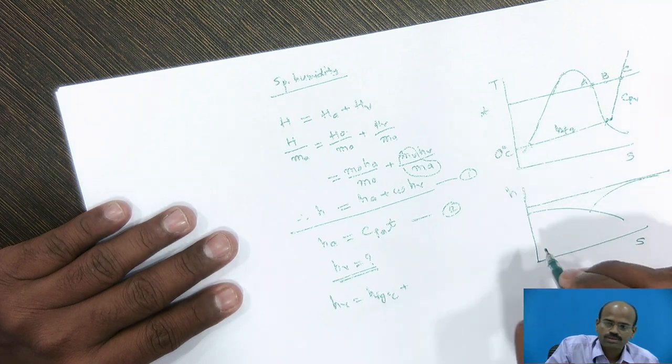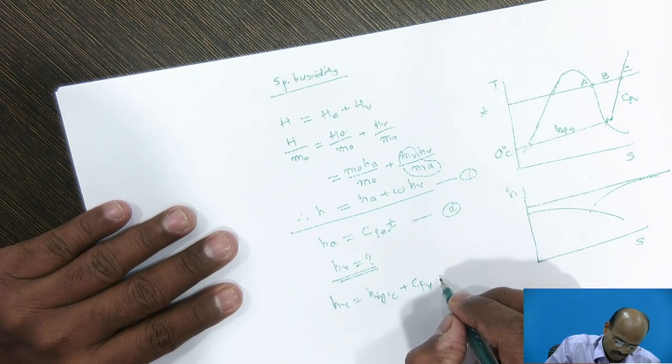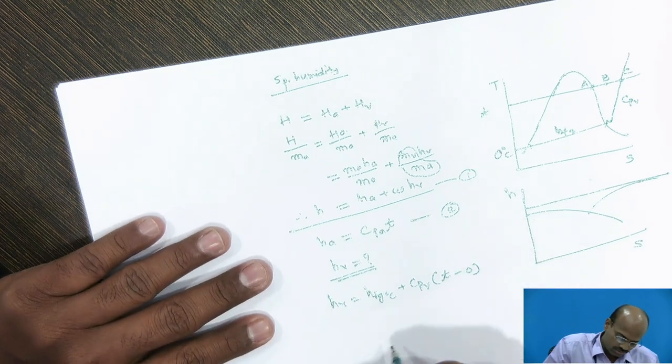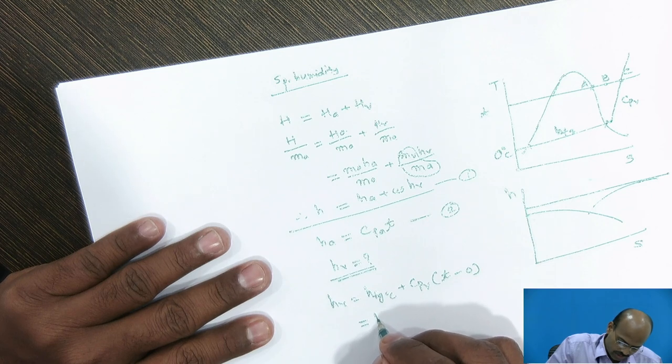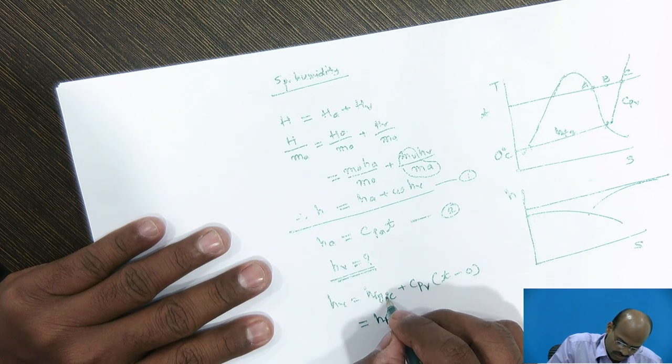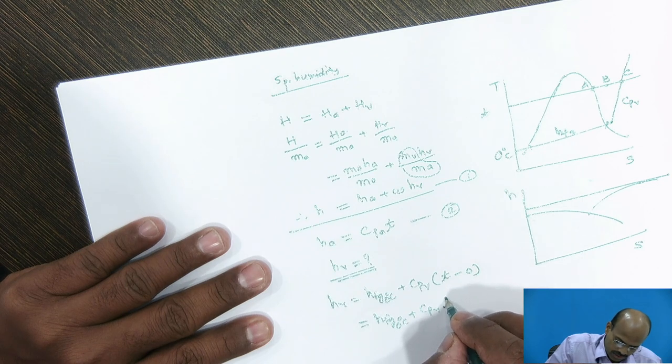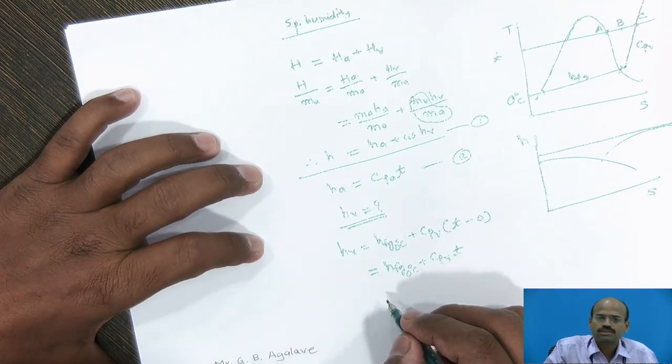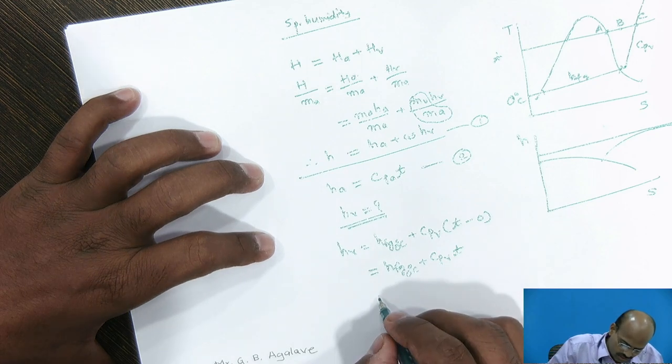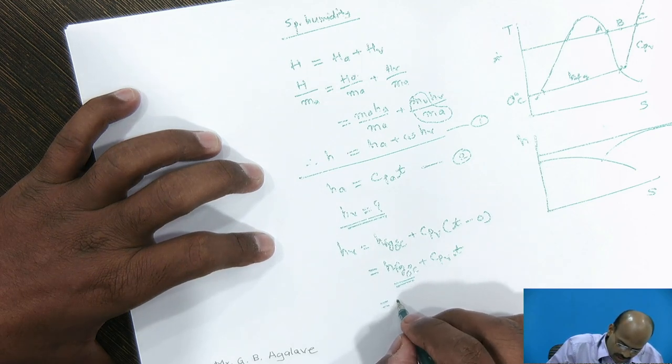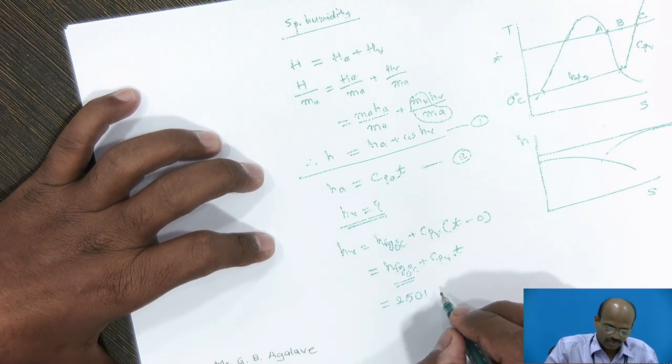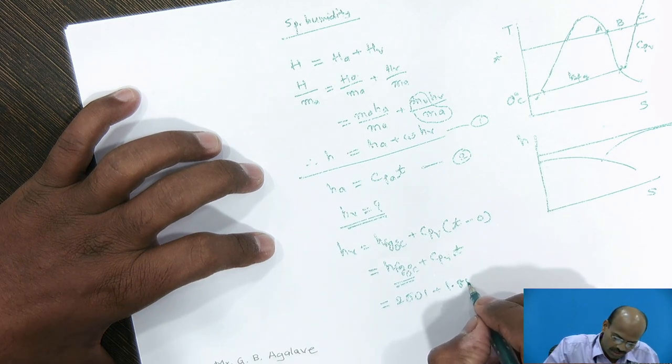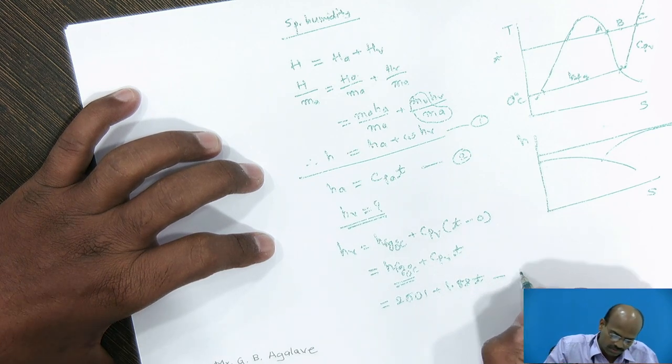plus Cpv, specific heat of superheated vapor into dry bulb temperature minus 0. So, it becomes Hfg at 0 degree Celsius, plus Cpv into dbt, dry bulb temperature. If we refer steam table, then at 0 degree Celsius, we will get the value of latent heat of vaporization as 2501, plus the Cpv is 1.88, 1.88 into T. This is the equation number 3.